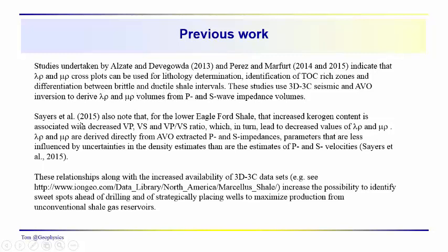They also felt those cross plots were good for differentiating between brittle and ductile shale intervals. Sayers, working on the Eagleford shale, notes that increased kerogen content — and kerogen is what heat and pressure convert organic matter into, and then time and temperature convert kerogen into petroleum, so kerogen is a TOC measure — leads to decreased Vp and Vs, with Vp decreasing more than Vs, giving a decreased Vp/Vs ratio. This leads to decreased values of lambda-rho and mu-rho derived from AVO-extracted P and S impedance volumes.